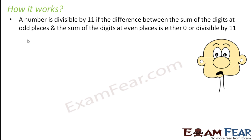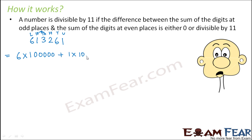Let us consider a 6-digit number 6,1,3,2,6,1 and determine if it is divisible by 11. The first step as usual is to expand the number. This is units place, tens, hundreds, thousands, ten-thousands and lakhs. So this would be 6 into 1,00,000 plus 1 into 10,000 plus 3 into 1,000 plus 2 into 100 plus 6 into 10 plus 1 into 1.